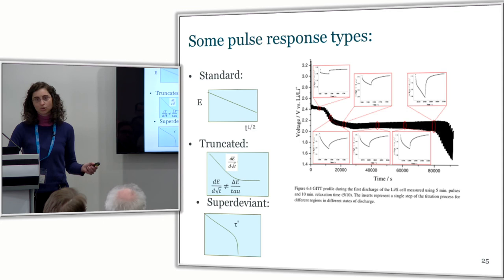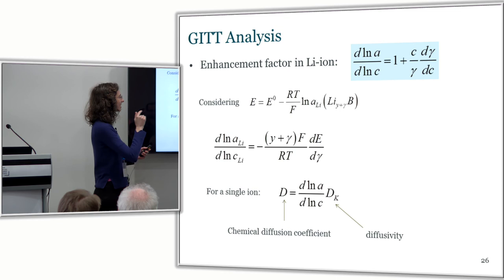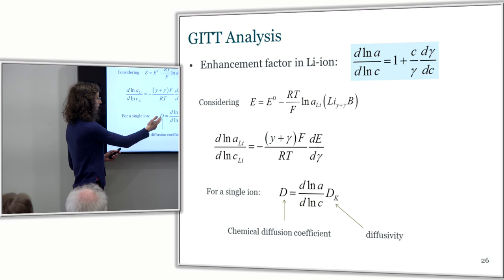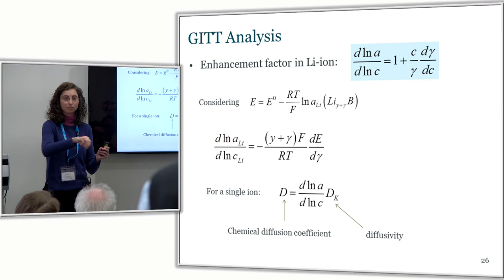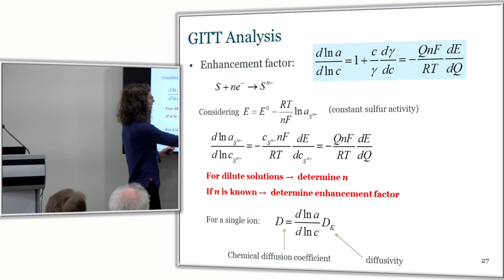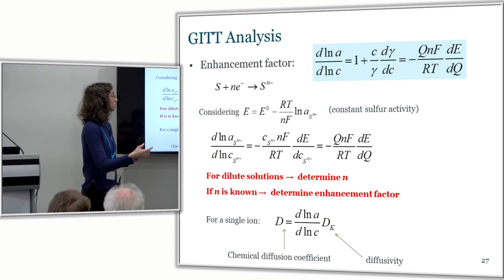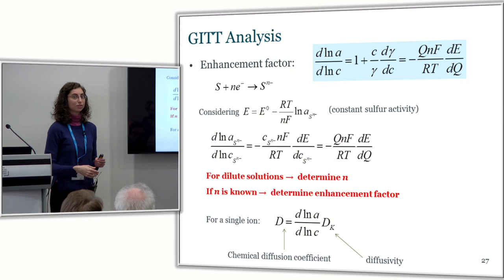There is another thing we plan to do. The enhancement factor is so important because it produces an enhancement in the value of the diffusion coefficient that we measure compared with what we could observe just from the rate of diffusion of one species. We will be able to determine that in lithium-sulfur batteries. We can just obtain the derivative of potential with charge, and we will be able to determine that. Also, for very dilute solutions, with this technique we will be able to determine n — the number of electrons involved per sulfur atom — which would tell us something about the speciation. So we are working on that. Thank you very much for listening.